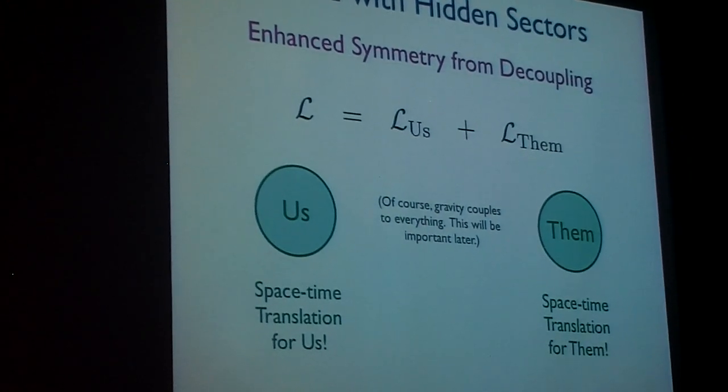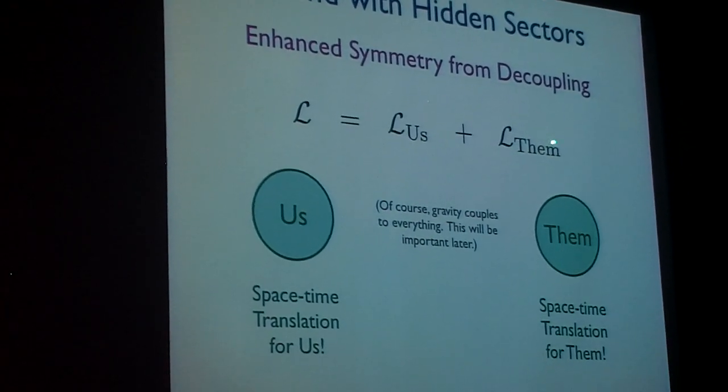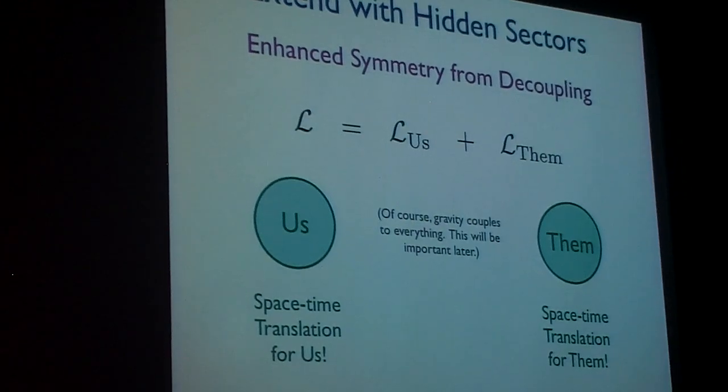These space-time translation invariances are only approximate since gravity actually couples everything together. That is, we can send a graviton over to them and they can bounce it back. But that's the only way we'd interact with them.